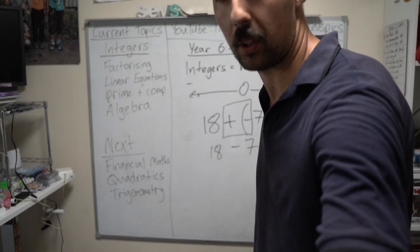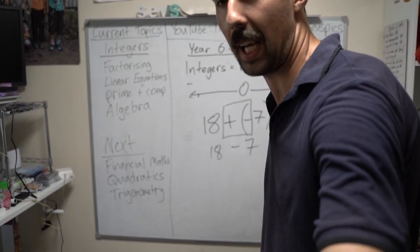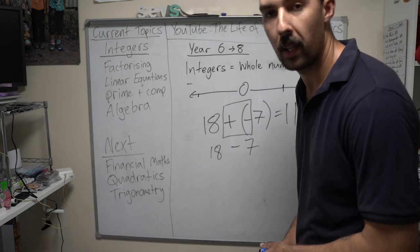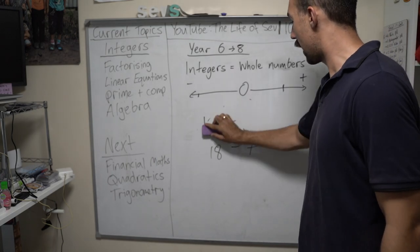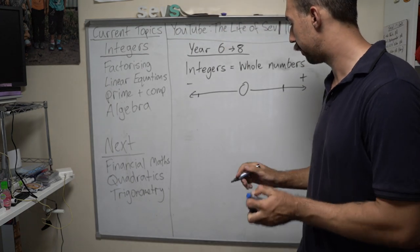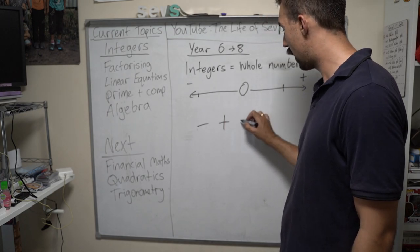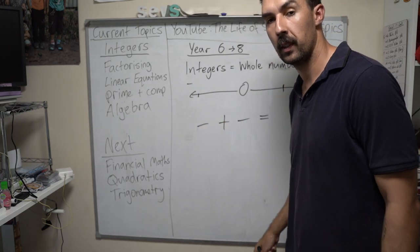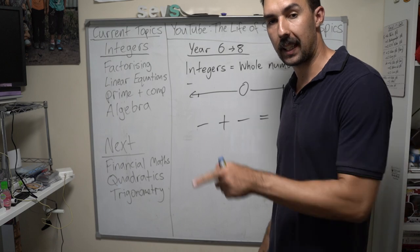Excellent. Here's a note you can take. If you have a negative and then you add a negative, which way are you going? Are you going left or right in total? If you have a negative and you add a negative, which way are you going to go? Negative. So, negative.